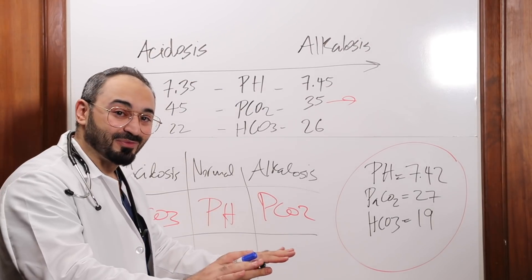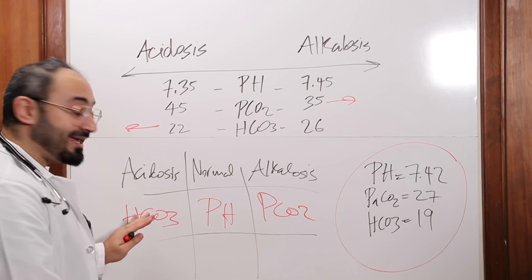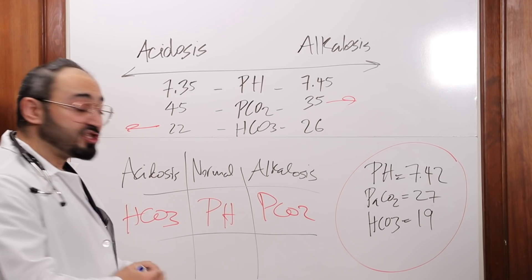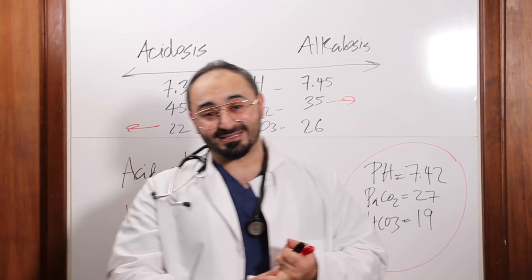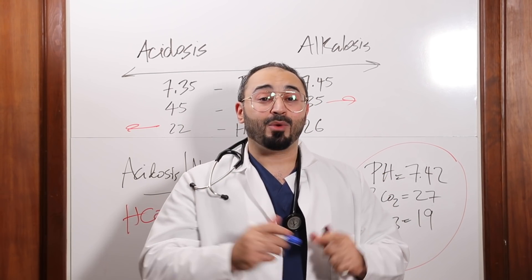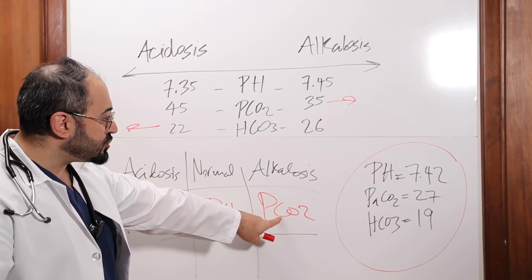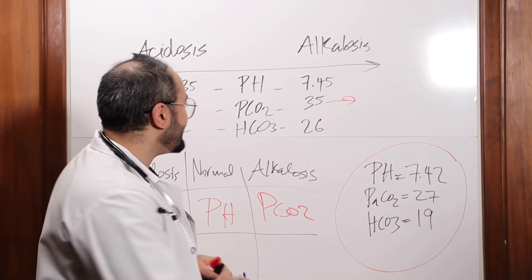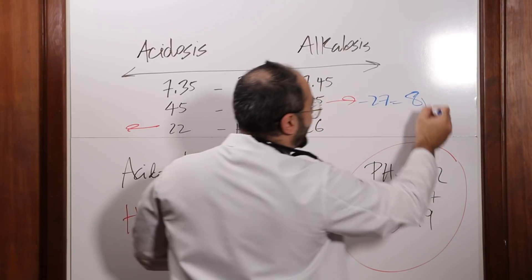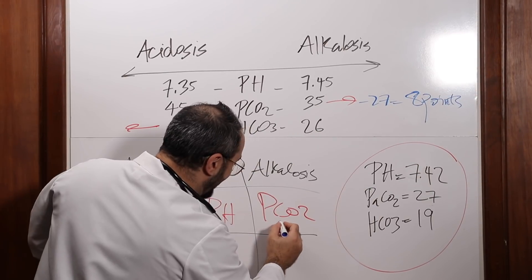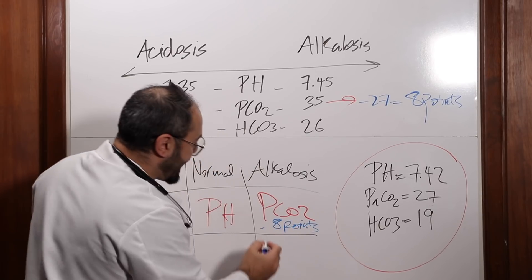First off, the pH, we're not gonna touch it right now because it's normal. The alkalosis is off. It's abnormal. And the bicarb is off as well. It's abnormal. So what I wanna check is I wanna check what's my primary problem. Is it the lungs or the kidneys? How do I check that? I wanna see which one is more abnormal. So for example, PCO2, we said the normal is 27. So how far is it from 35? Minus 27, it's 8. So 8 points. I'm gonna put here 8 points. It's off 8 points.